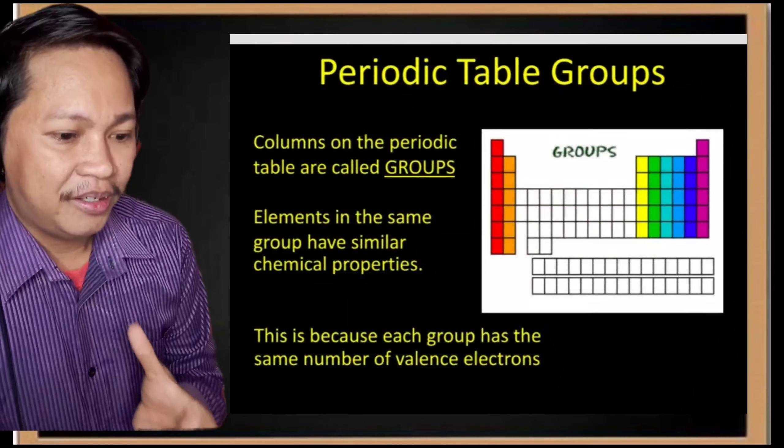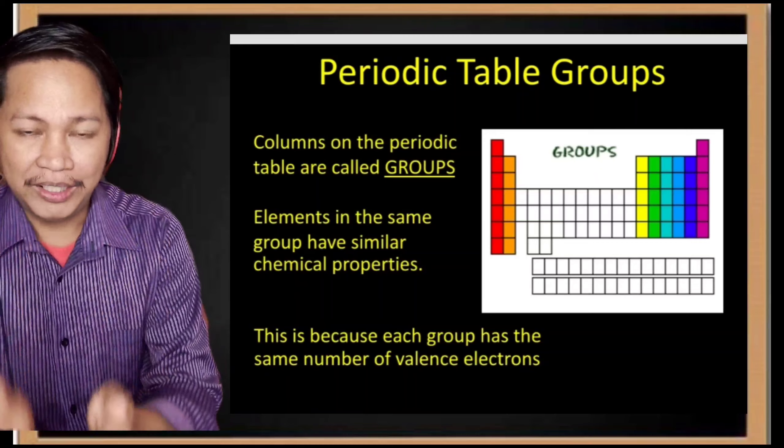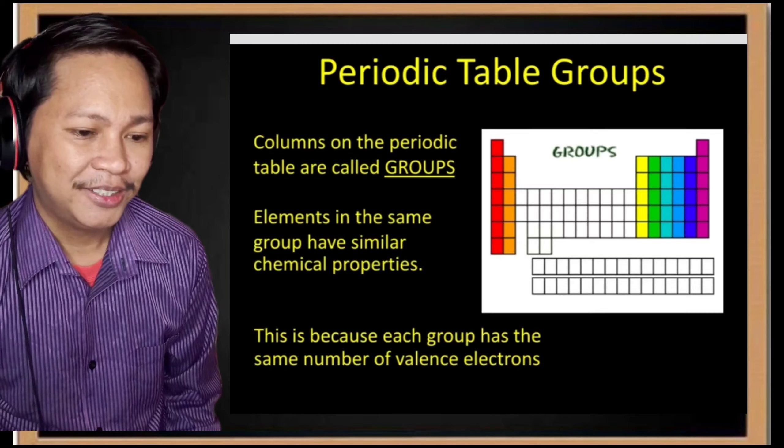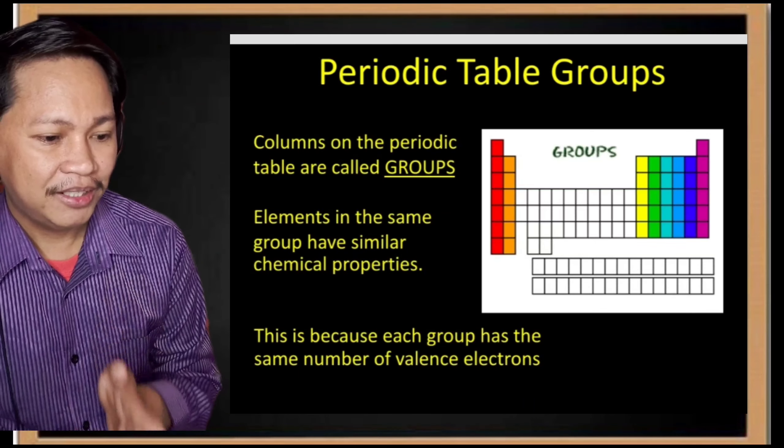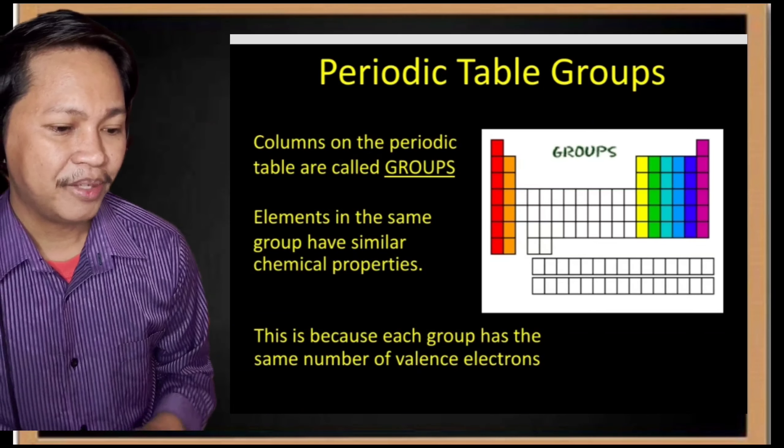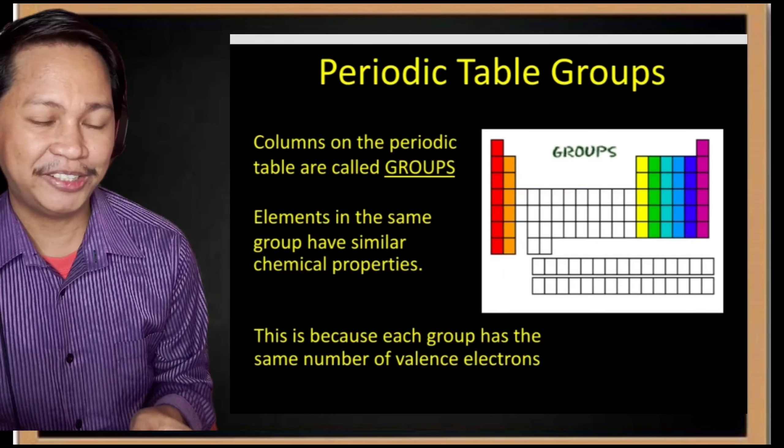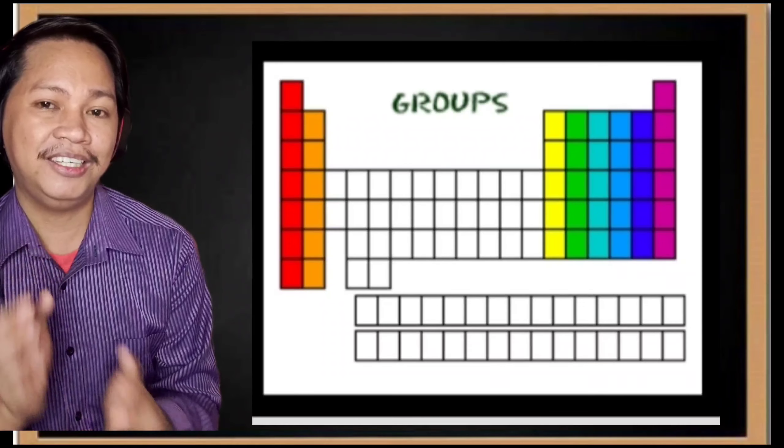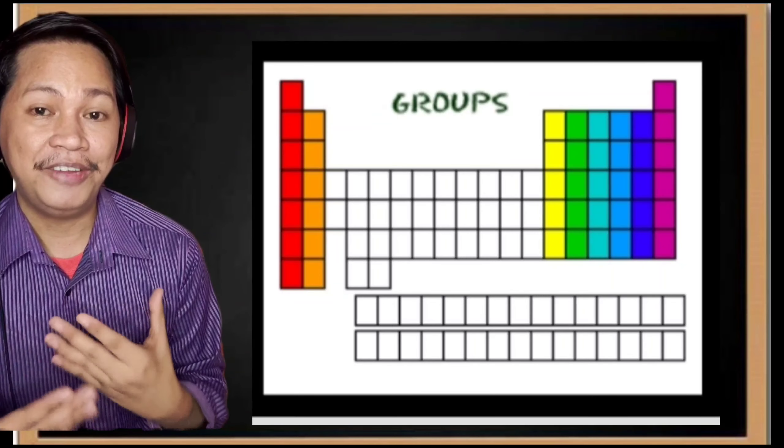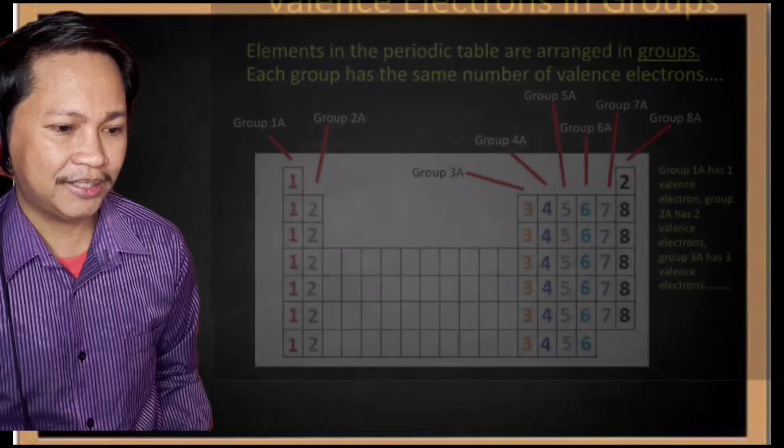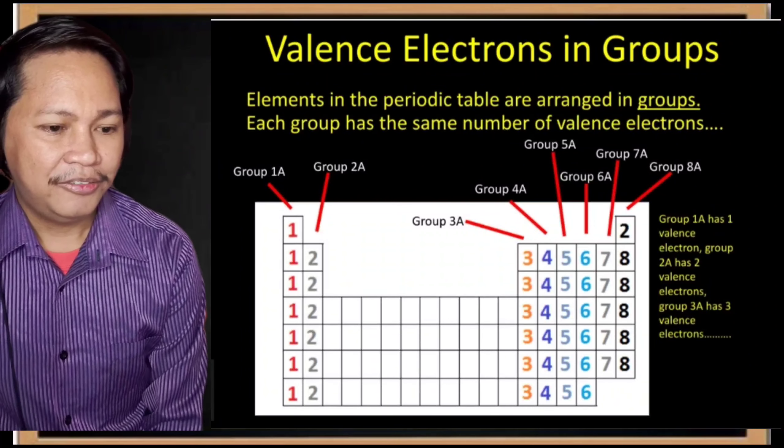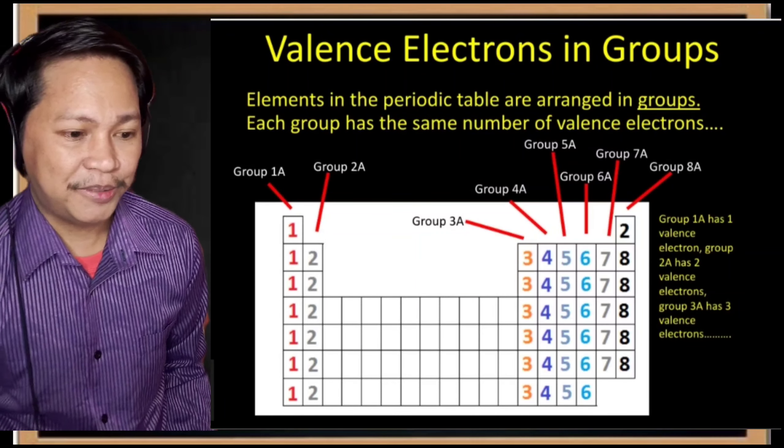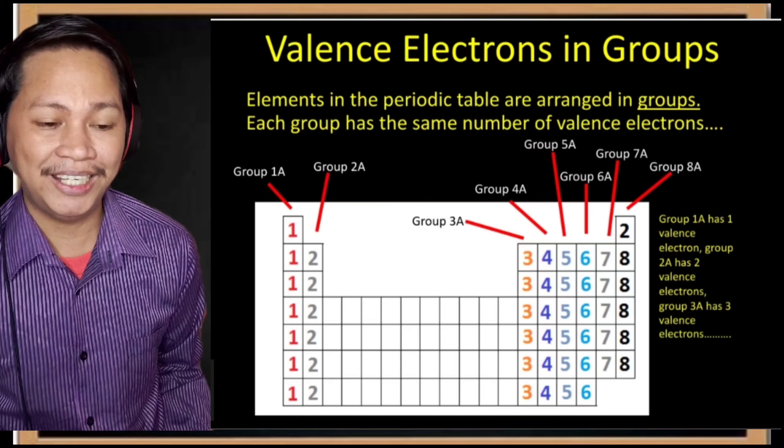We have periodic table groups—columns on the periodic table are called groups, or in other words, they're called families. Look at the colored portion. Elements in the same group have similar chemical properties. This is because each group has the same number of valence electrons. As you notice, the colored portion is what we will use for determining valence electrons.